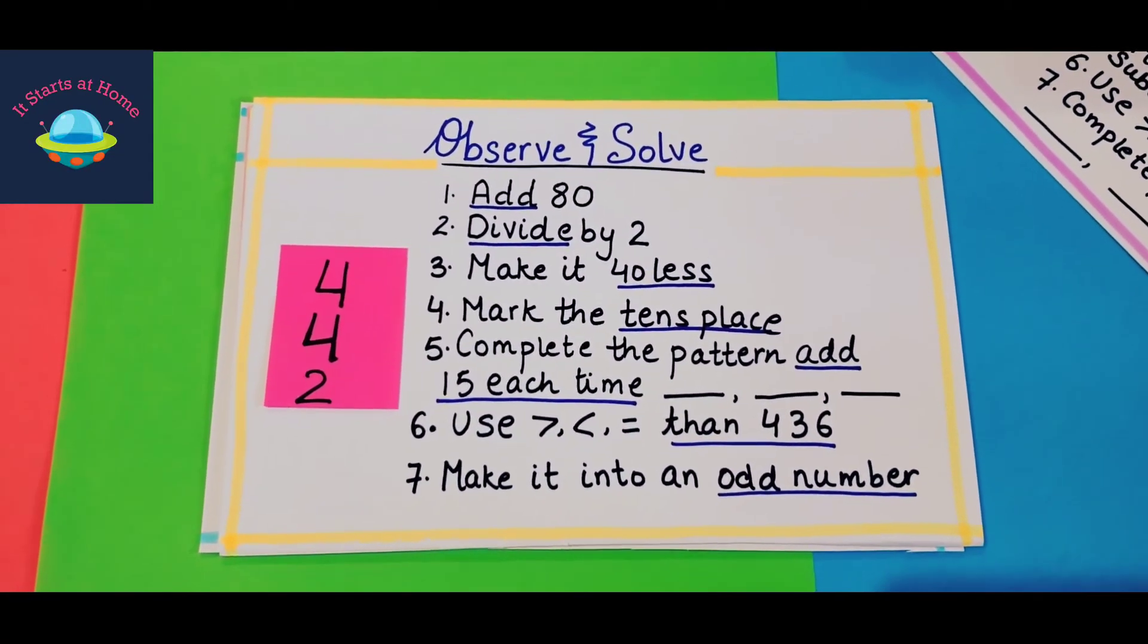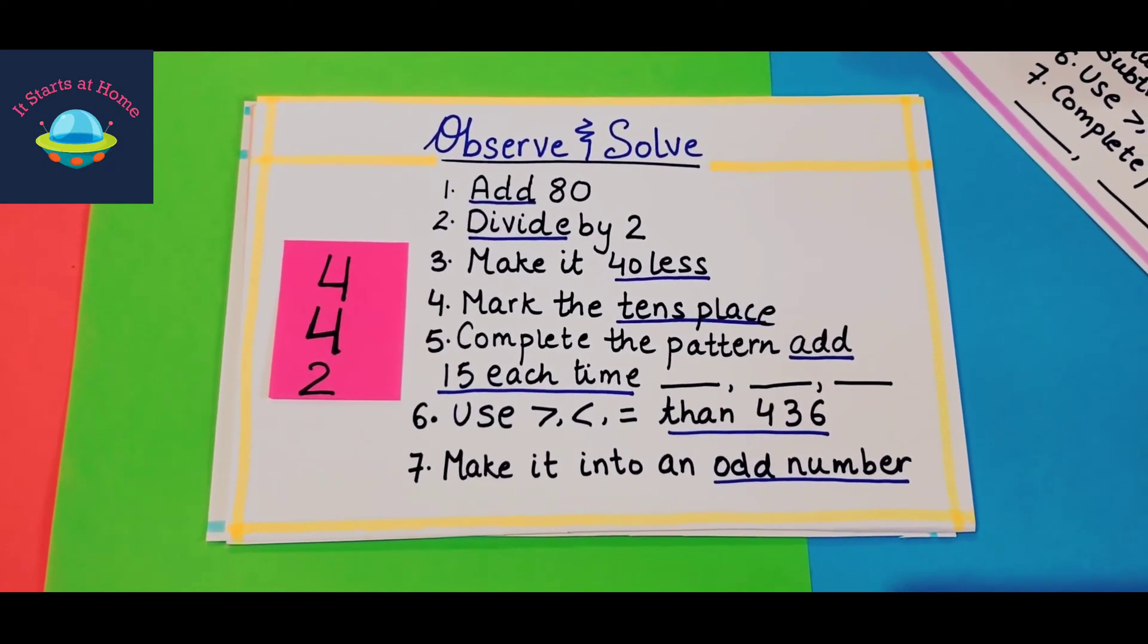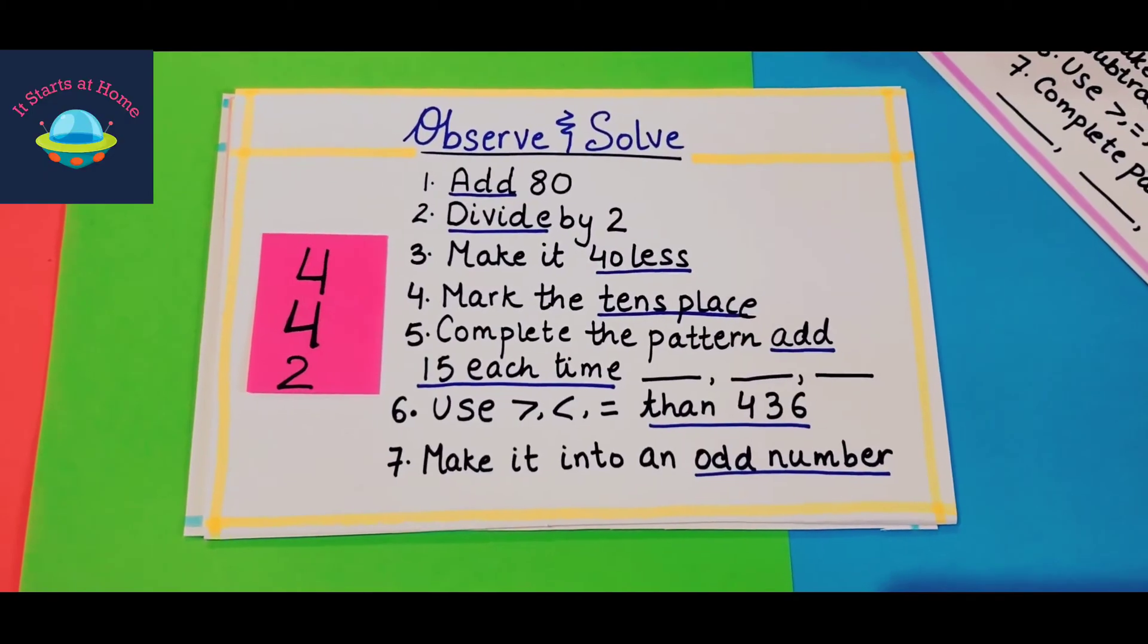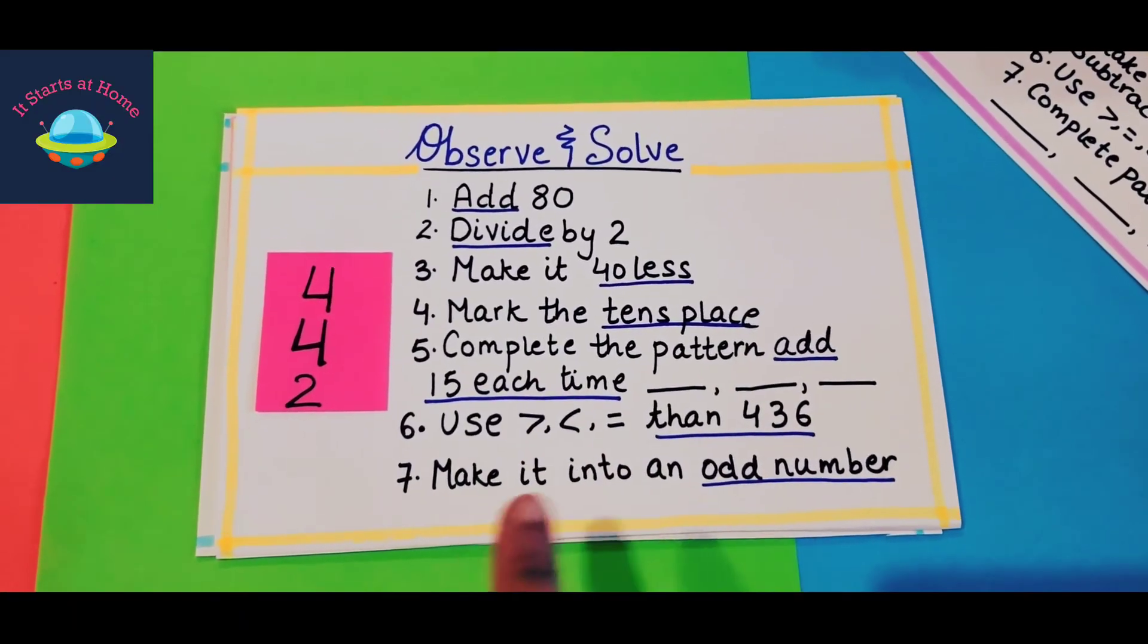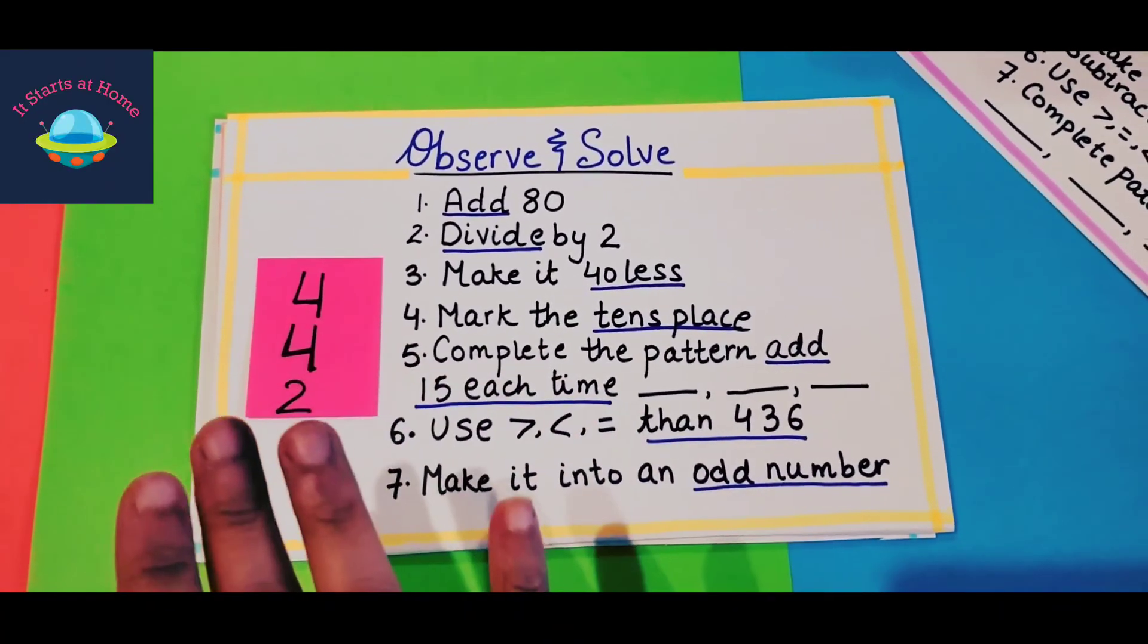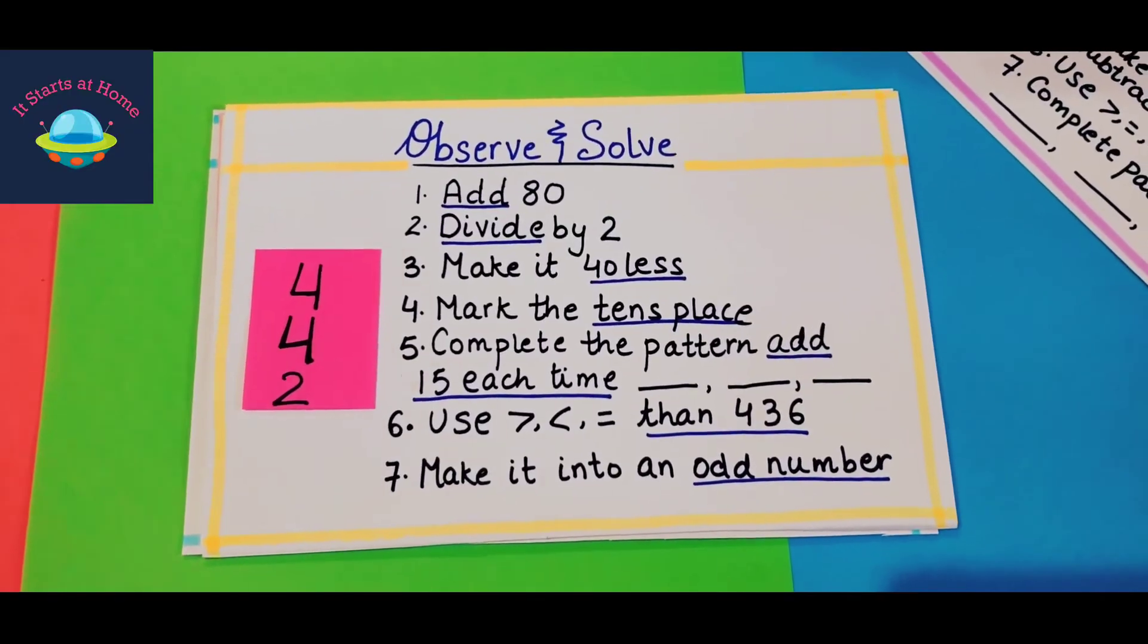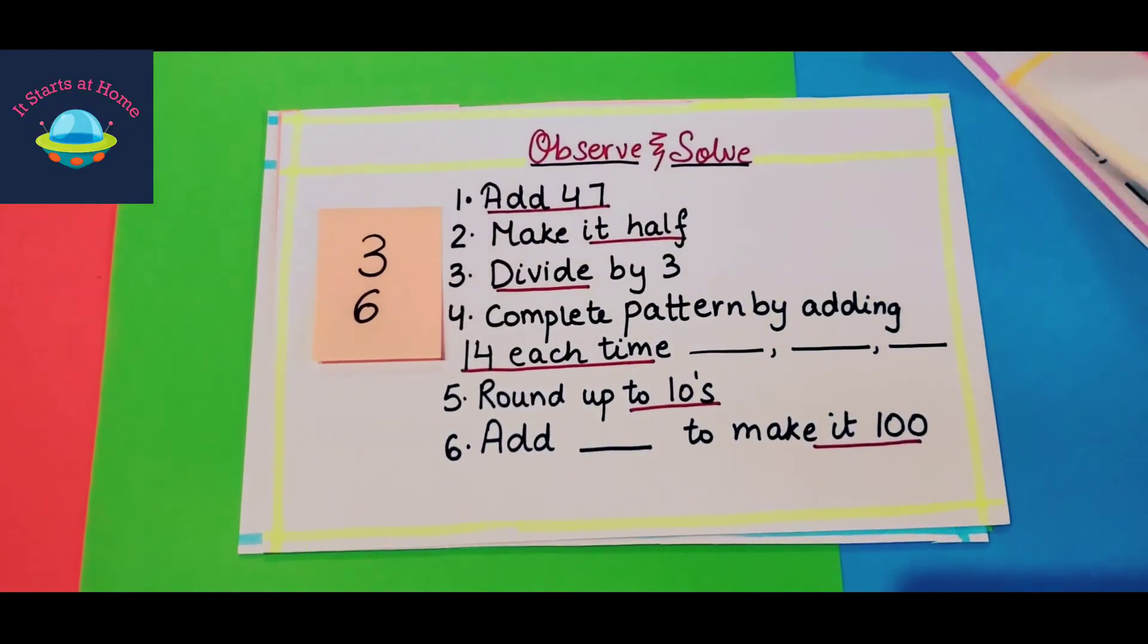I have used the number 442, and it is add 80, divide by 2, make it 40 less, mark the tens place, complete the pattern add 15 each time, use greater than less than, make it into an odd number. I have not written how to make an odd number so he can do it according to his wish. You can see there are different things that I'm adding into each card.